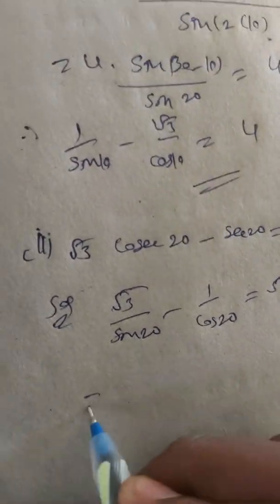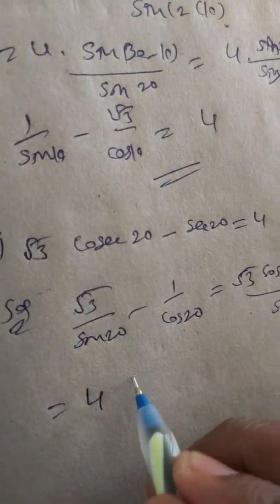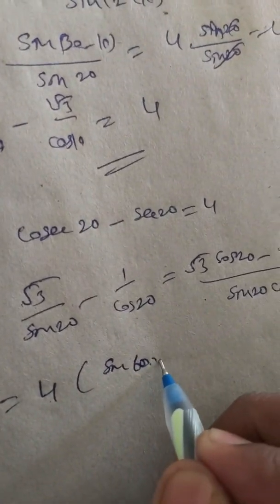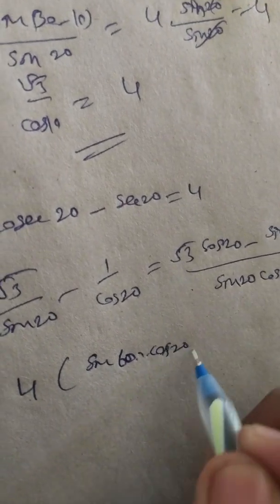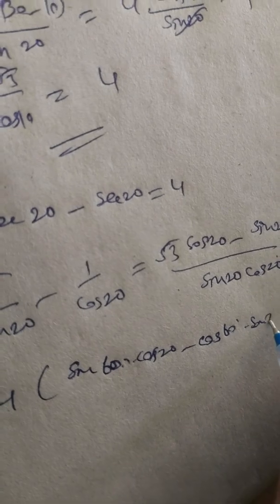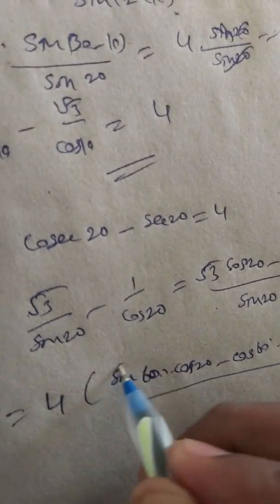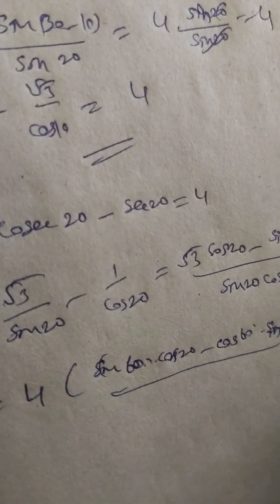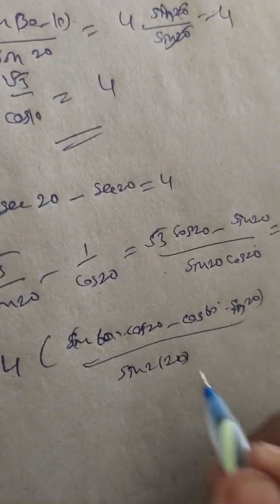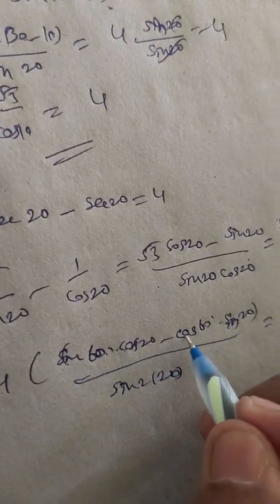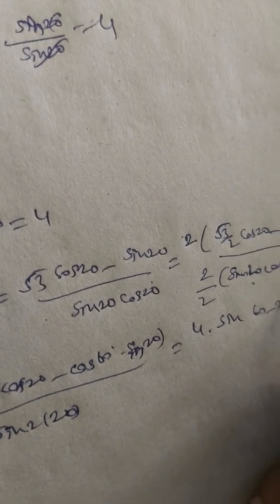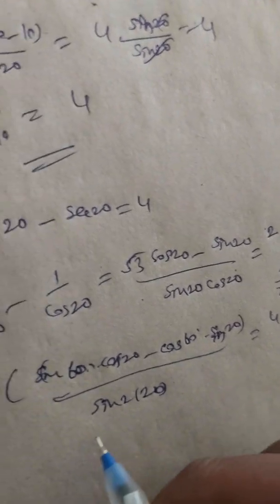This equals 4 times [sin(60°)·cos(20°) minus cos(60°)·sin(20°)] divided by 2·sin(20°)·cos(20°), which is sin(2×20°) = sin(40°). Applying sin(A - B): sin(60° - 20°) = sin(40°).